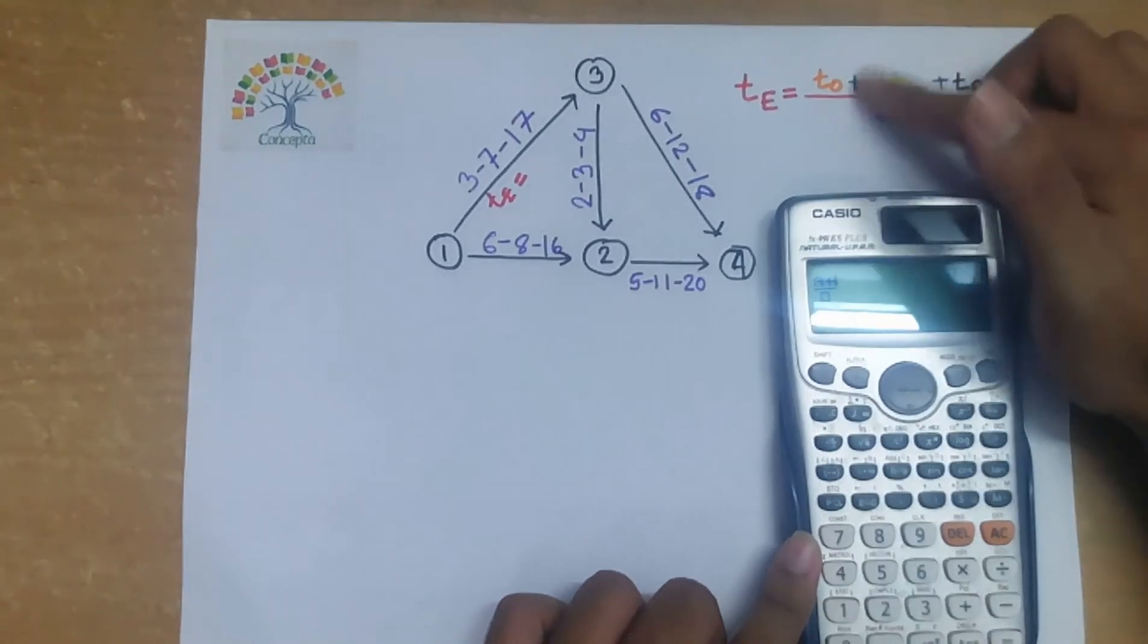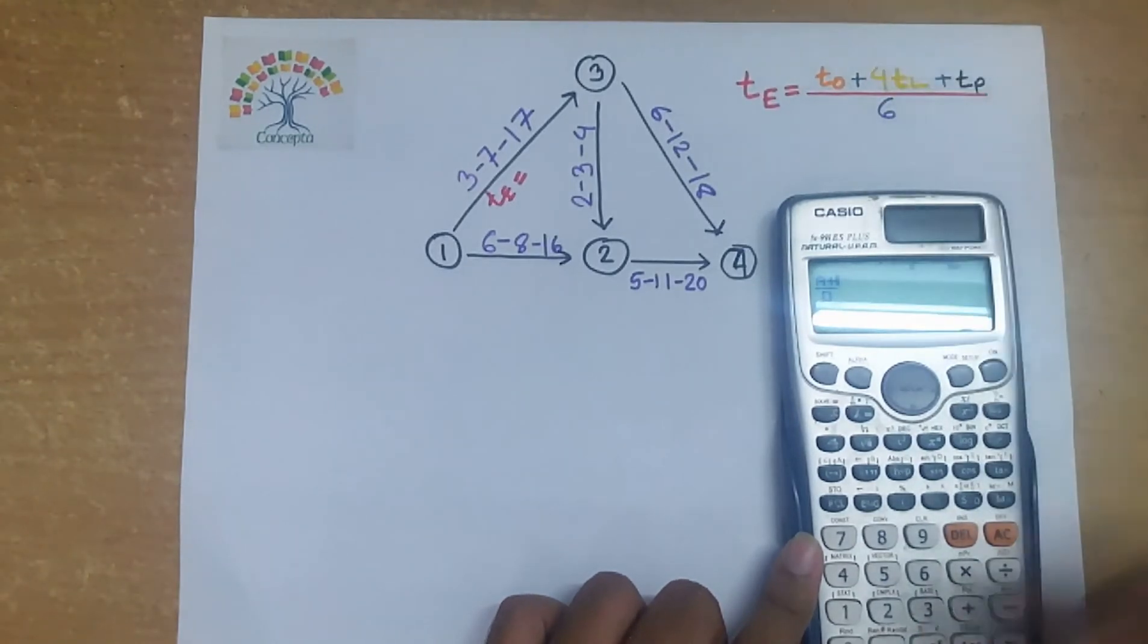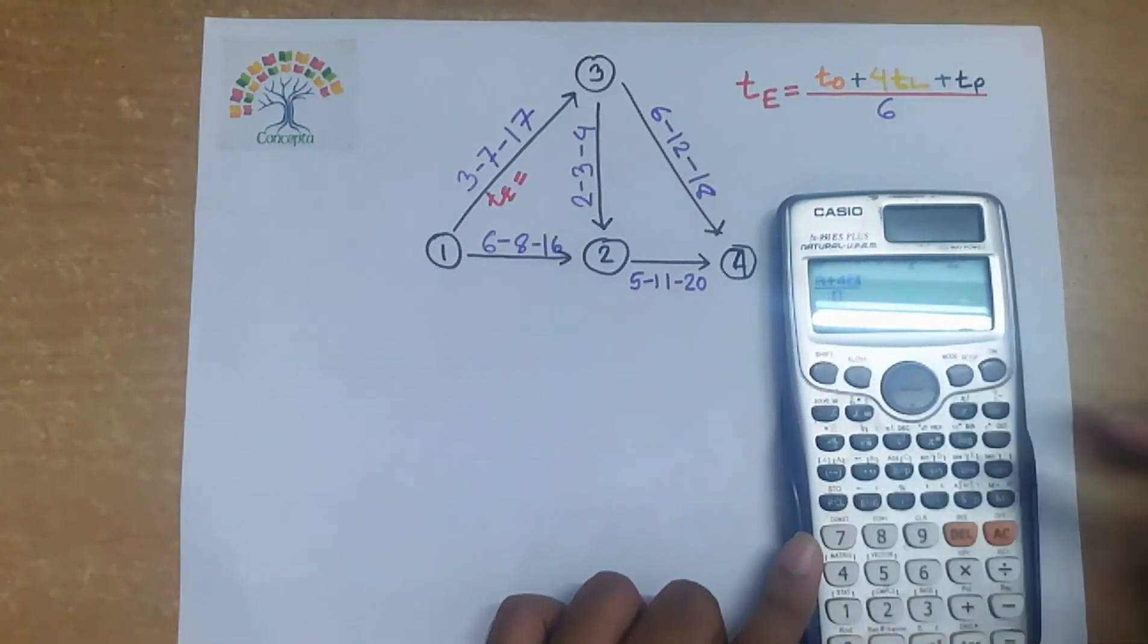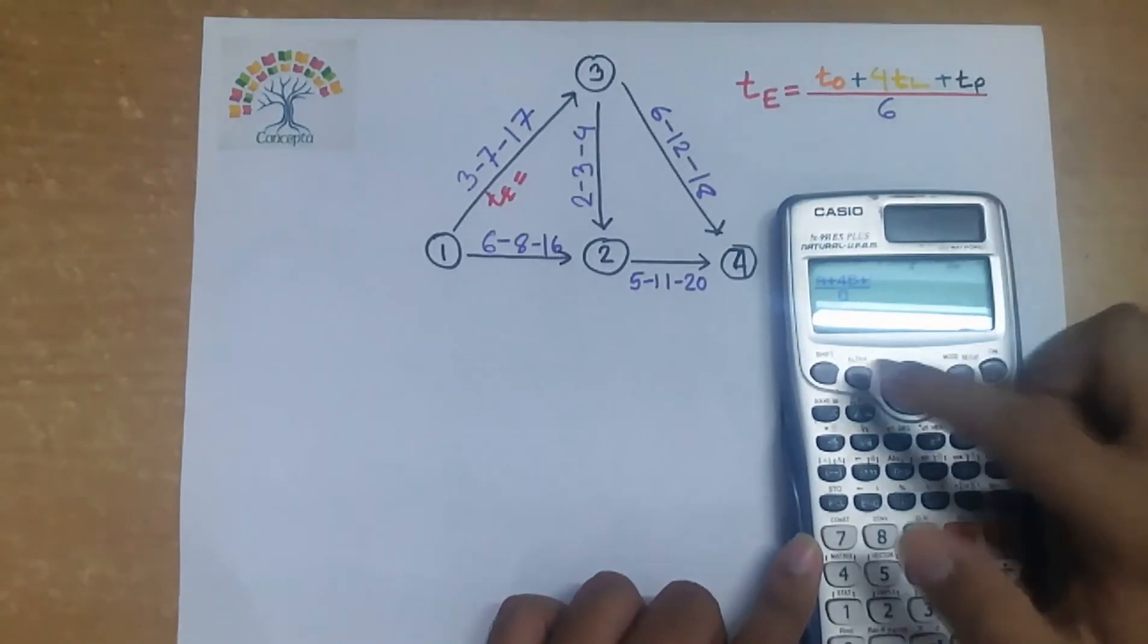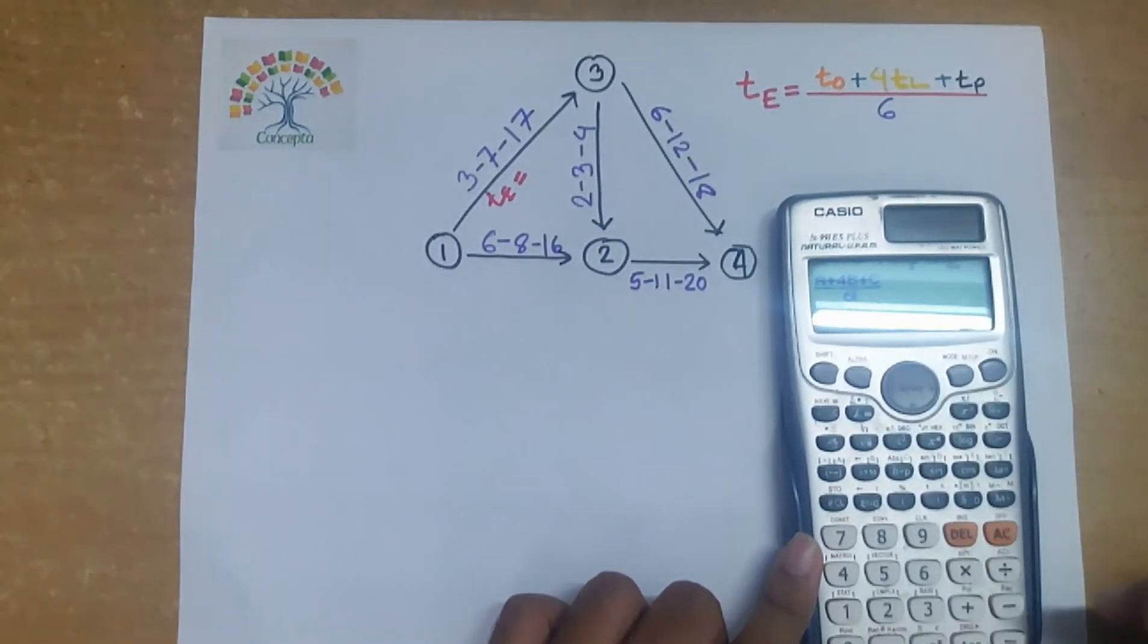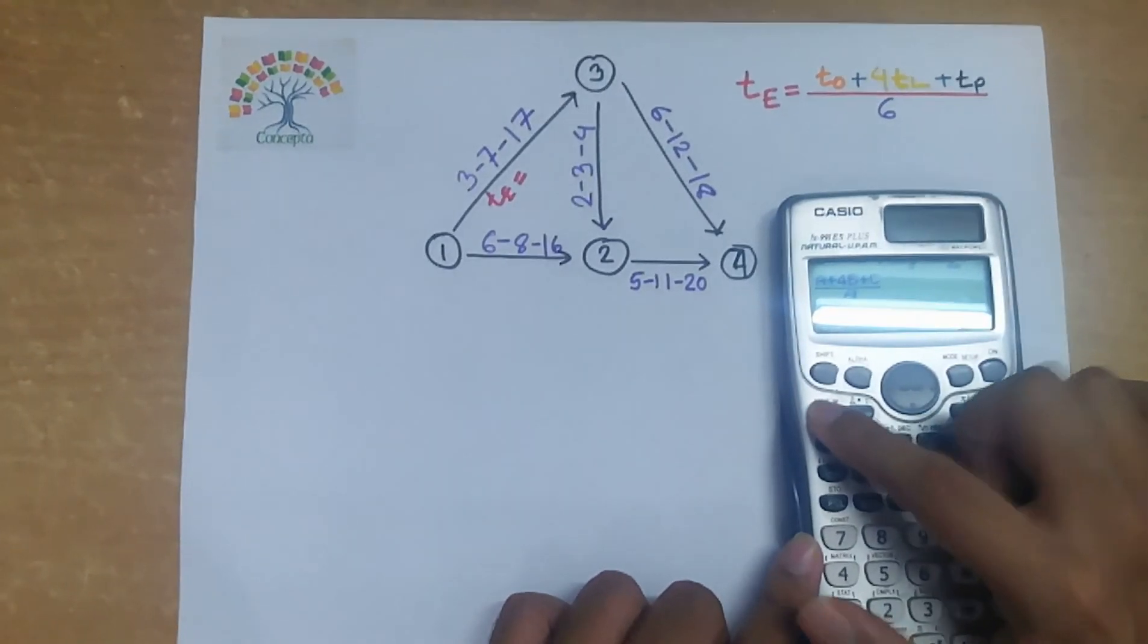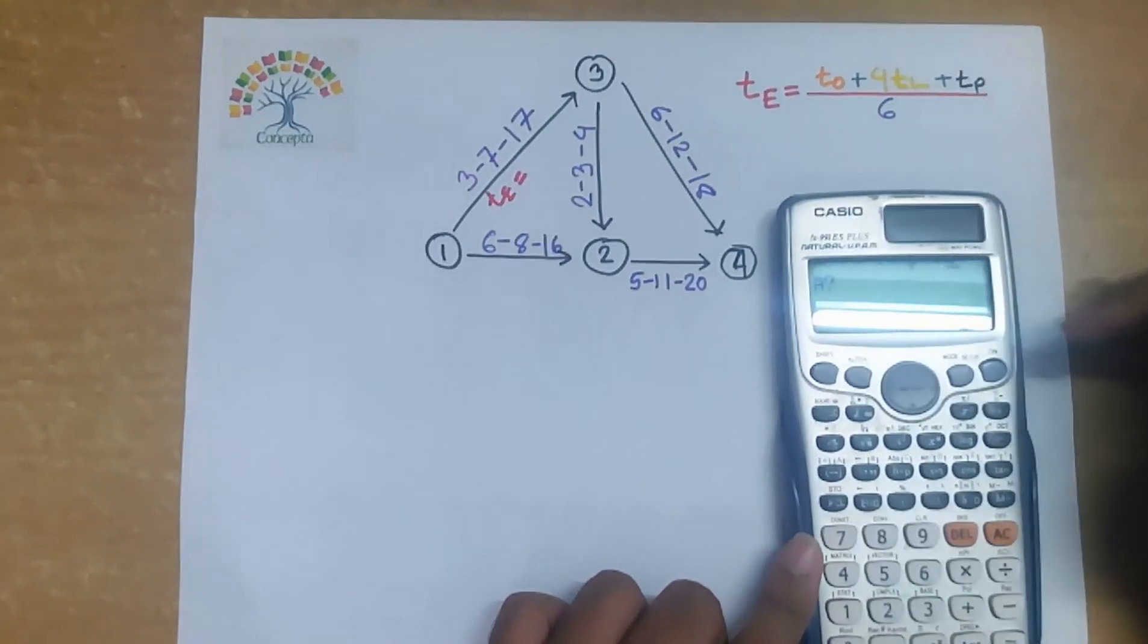Then we will use this operation or this operator, that means 4 alpha b. Here b is for tl. Then plus c. Then plus, c for tp, divided by 6. Then we will press calc, that means this button calc. Here comes a equals to what.